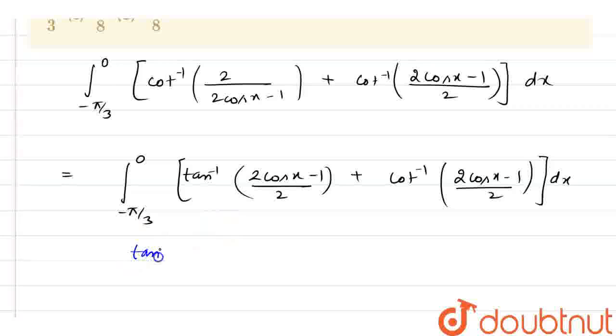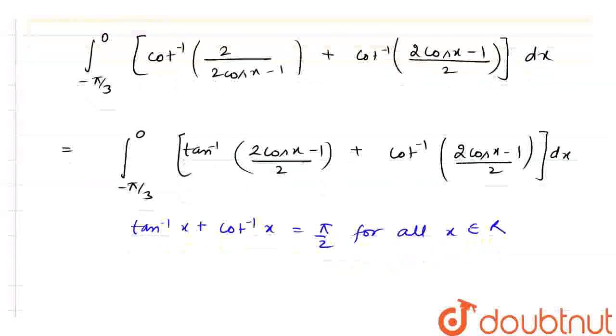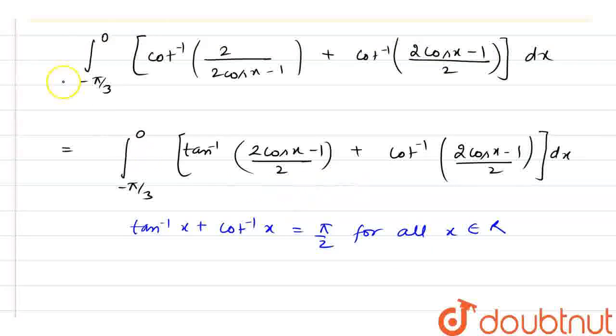Now, we know that tan inverse x plus cot inverse x equals to pi by 2 for all x belongs to real number. So, this is true in every condition.